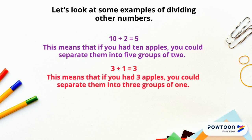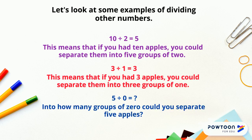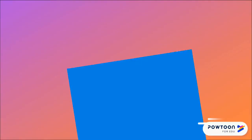Five divided by zero equals what? Into how many groups of zero could you separate five apples? I hope you understand.